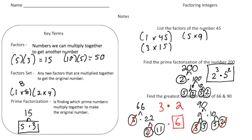Here are the steps: first, find the prime factorization of each number. Then look at all the circled prime numbers, and for every common pair, write it down. Multiply the common pairs together and that gives you the GCF.